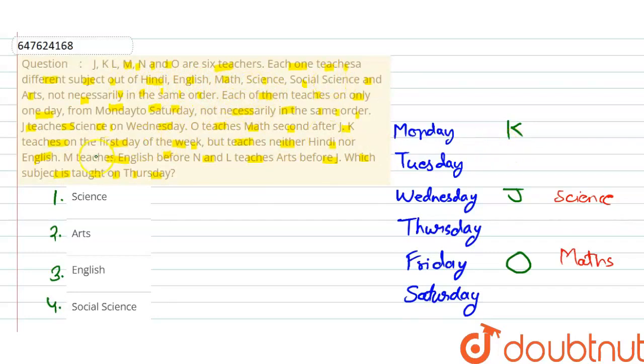Now, next statement hai, M teaches English before N and L teaches Arts before J. So, L is before J, so L will be on Tuesday and it teaches Arts. So, K padhayega hamko Social Science.